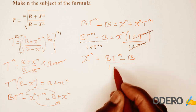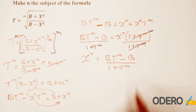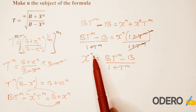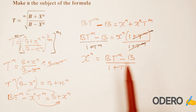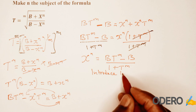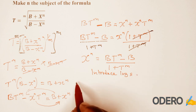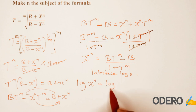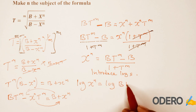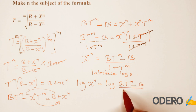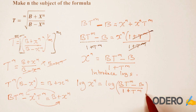Then we want to find what is n, but it is a power — it is an exponent. So therefore we can introduce logs on both sides. If you do so, you're going to have log of x raised to n is equal to log of b t raised to m minus b over 1 plus t raised to m.